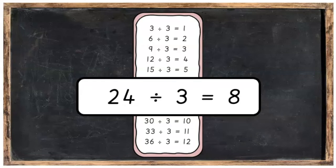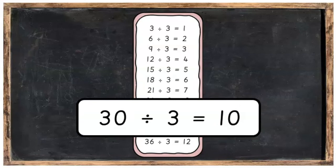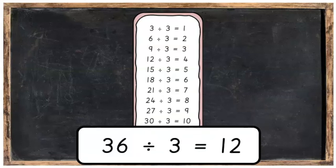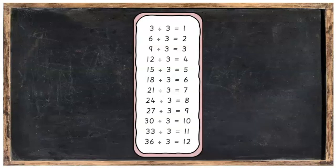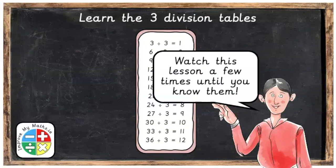Three into twenty-four goes eight times. Three into twenty-seven goes nine times. Three into thirty goes ten times. Three into thirty-three goes eleven times. And three into thirty-six goes twelve times. And that's it — great job!